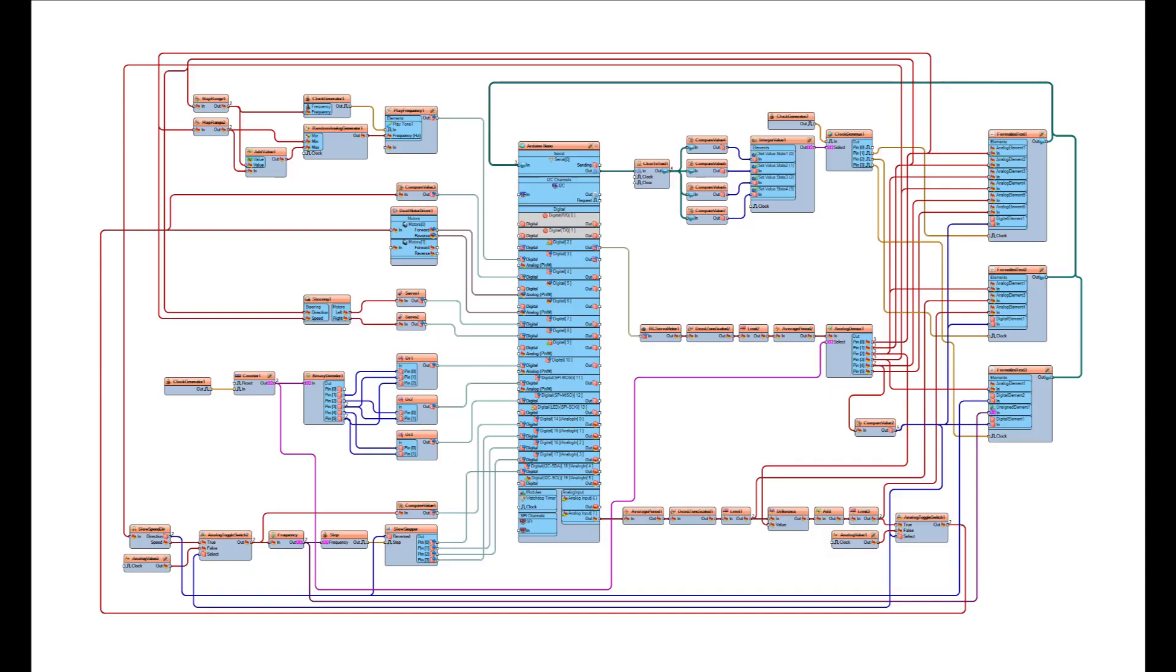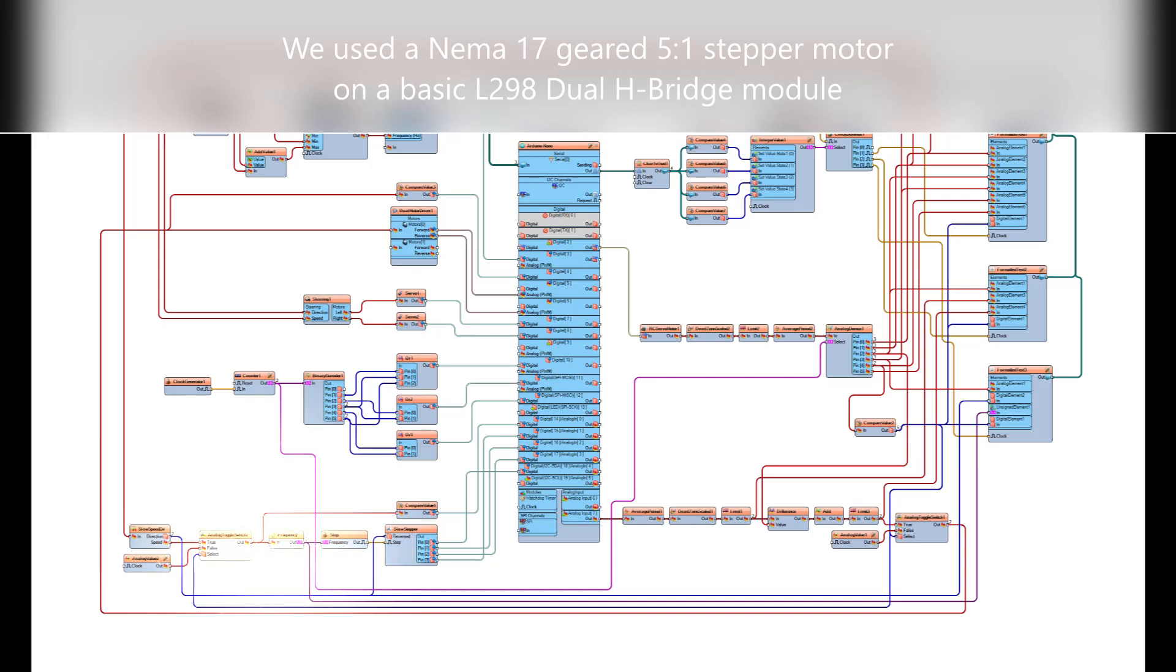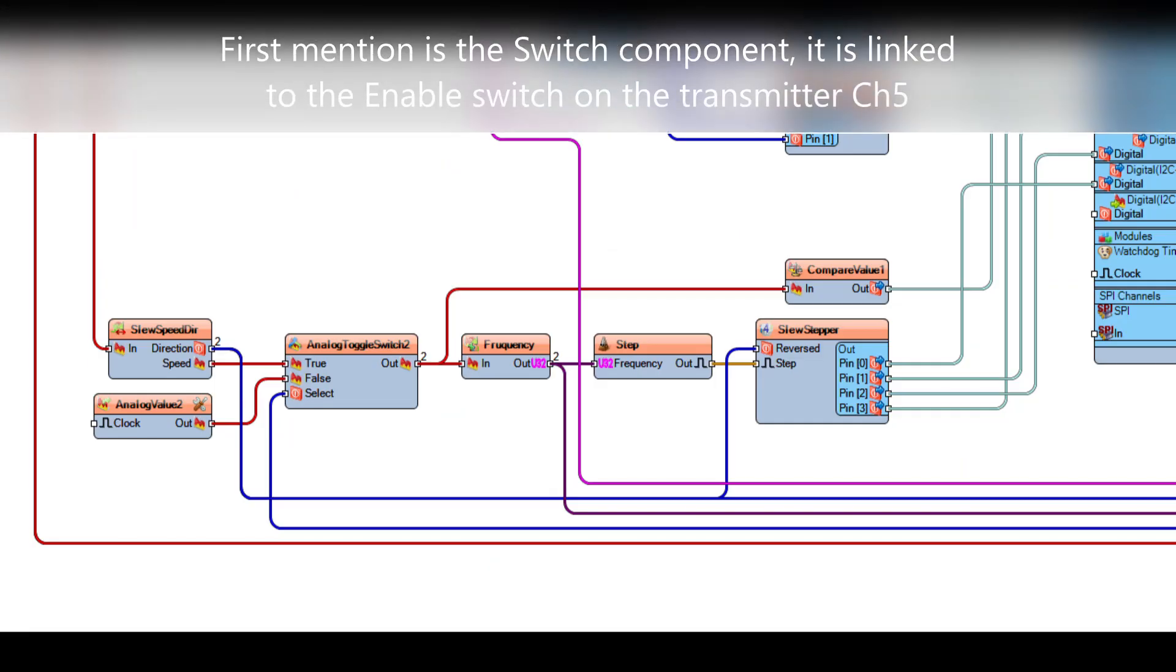The next section we're going to look at is the slew angle of the turret. Now the turret is controlled by a stepper motor and those controls are down in the lower left hand corner of the sketch. The first thing I'll mention is the analog toggle switch. That is channel five coming off of the switch on the remote control to enable the turret.